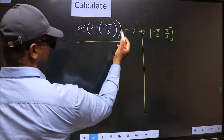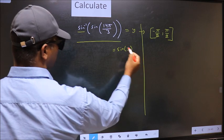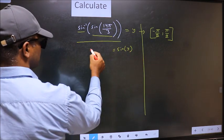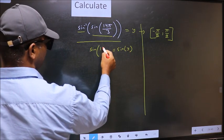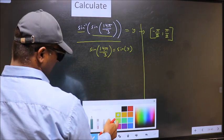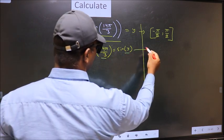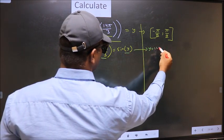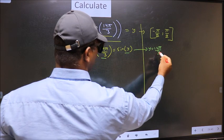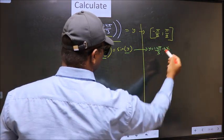Shift sin inverse to the other side. It will become sin y and this, no change. Now compare both sides. We get y to be 14π by 3. Does this lie in this interval? No. So reject this answer.